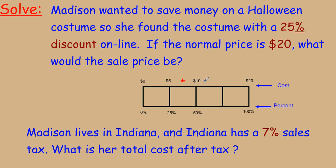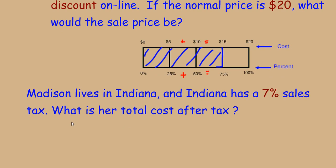We can add 25% and 50% together — along with their dollar values — to get 75%, which corresponds to $15. Since Madison saves 25%, she is technically paying 75%, and 75% of the costume costs $15. Now, Madison lives in Indiana, which has a 7% sales tax, so what is her total cost after tax?